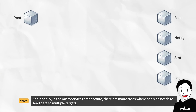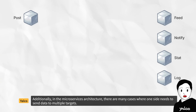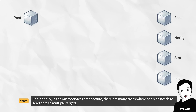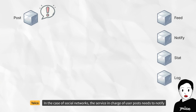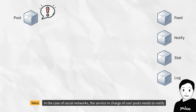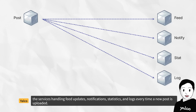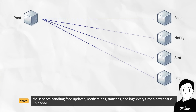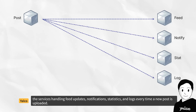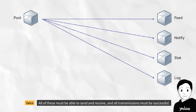Additionally, in the microservices architecture, there are many cases where one side needs to send data to multiple targets. In the case of social networks, the service in charge of user posts needs to notify the services handling feed updates, notifications, statistics, and logs every time a new post is uploaded.